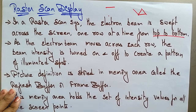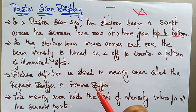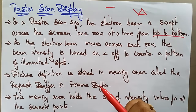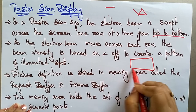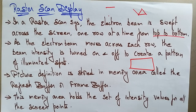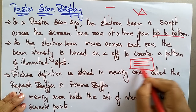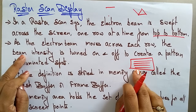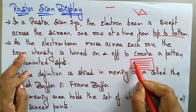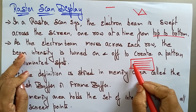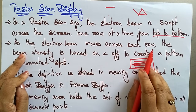The electron beam is moving across each row — these are called scanning lines. The electron beam moves across each row: first it starts here and ends here, then again starts here and ends here, like this. So the electron beam moves across each row, and the beam intensity is turned on and off to create a pattern.